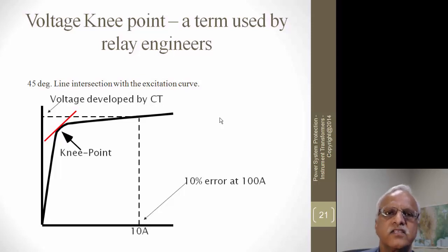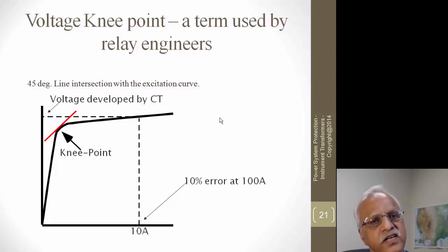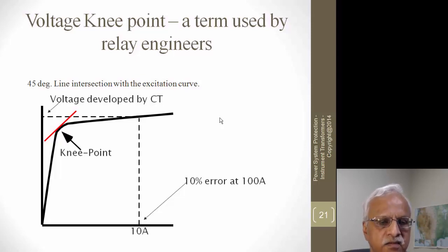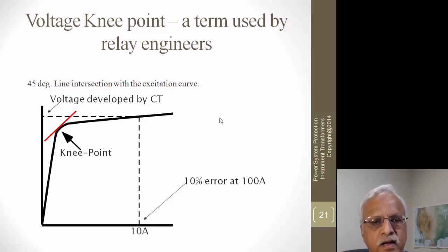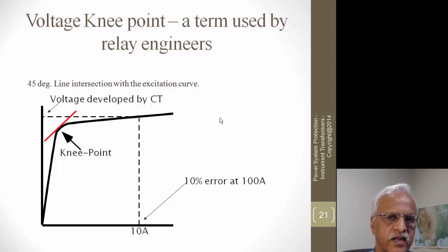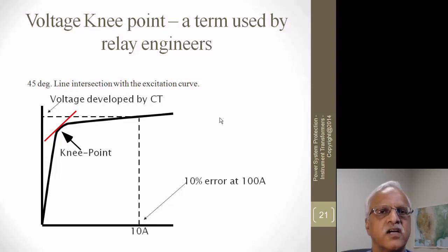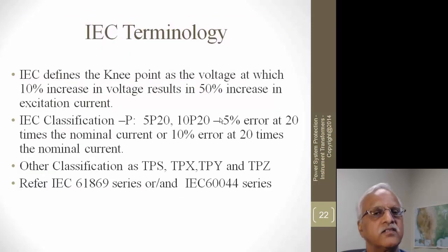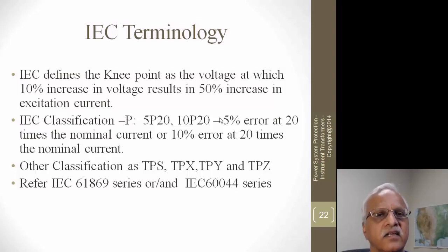There is another term used by relay engineers: the knee point. It indicates where the CT remains linear up to that point and starts saturating beyond it. ANSI defines it as the point on the excitation curve at a 45-degree tangent. As you apply increasing voltage to the secondary, it increases linearly up to that point, after which a small voltage increase causes a much larger excitation current increase. IEC defines the knee point as where a 10 percent increase in voltage results in a 50 percent increase in excitation current.